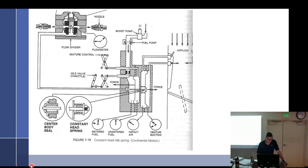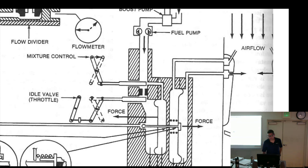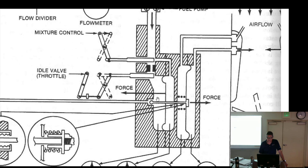A mixture control has been added. It's drawn blocking the fuel completely, but it controls fuel going to both chambers. If you only made the metering orifice smaller and smaller while unmetered stayed at five and air metering force stayed the same, what would happen to the pressure in the metered chamber? If that chamber decreases, the poppet would open — you'd get an exponential effect you don't want.